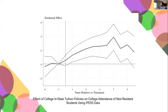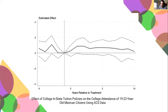I also ran the analysis using the CPS data and saw a similar story, but I've omitted that for time. Lastly, here is the chart using individual-level data where I conduct a placebo test, and you see that there is no effect for U.S. citizen Mexican immigrants. This adds to the evidence that this policy had a large effect on the population of interest — non-citizen, likely undocumented immigrants.